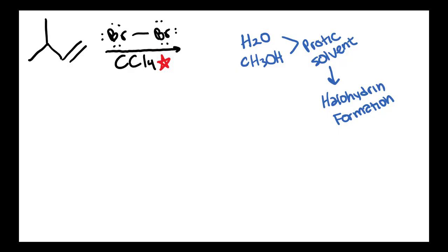So here we have a halogenation reaction, and the way that we know that this is halogenation is because we have a double bond, or an alkene, and we're reacting it with Br2 within an aprotic solvent. It doesn't have to be Br2 — we could also use Cl2 instead. But the important thing to hone in on is that solvent. You guys see the carbon tetrachloride, the CCl4. CCl4 is an example of an aprotic solvent, and that's important because that helps confirm that we're doing a halogenation reaction.